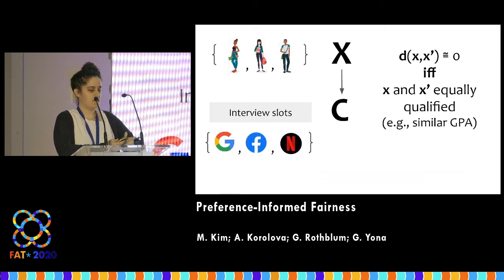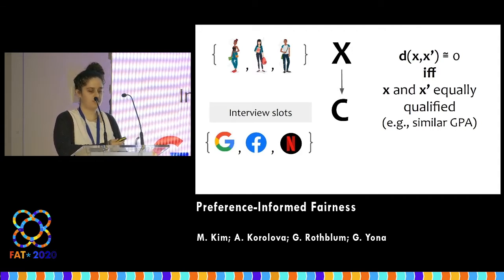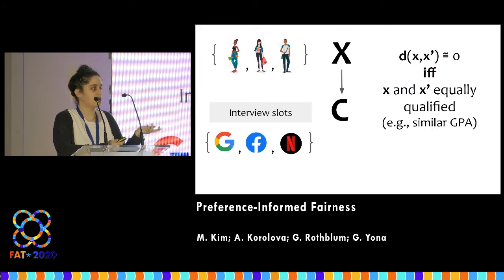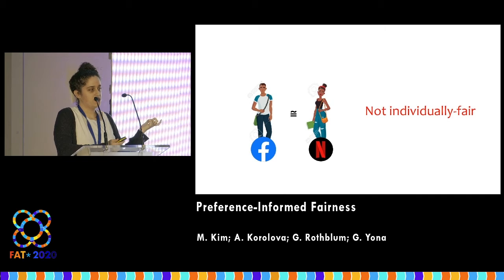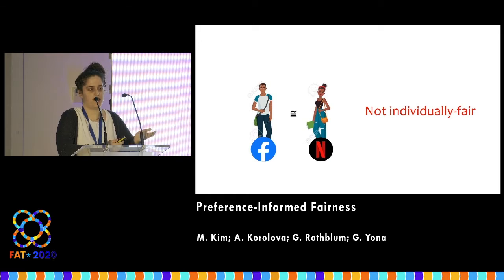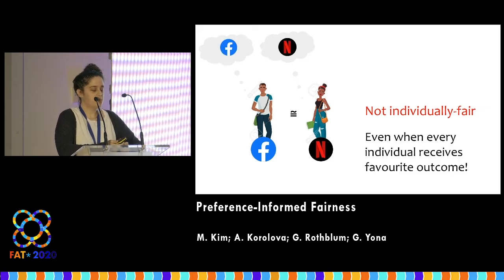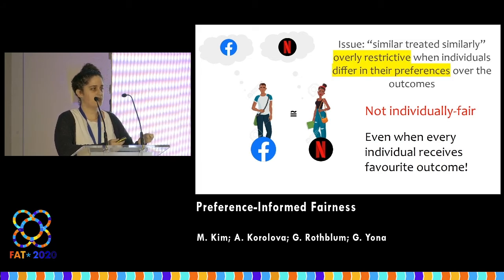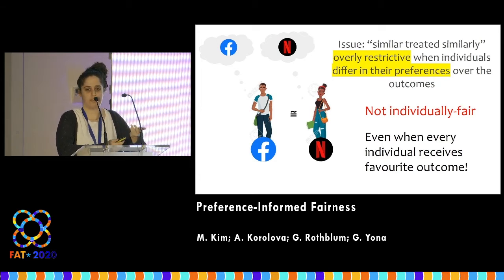We can slightly change this example in a way that makes individual fairness look less reasonable. Now I'm allocating interview slots — think of graduate students and Google, Facebook, Netflix. I'm concerned about discrimination, so the metric is whether two students are equally qualified. If two equally qualified individuals — one getting the Facebook interview, the other the Netflix interview — this allocation is not individually fair even when each person is getting their favorite outcome: he wants Facebook and she wants Netflix. So individual fairness can be overly restrictive when individuals differ in their preferences over the outcome space.